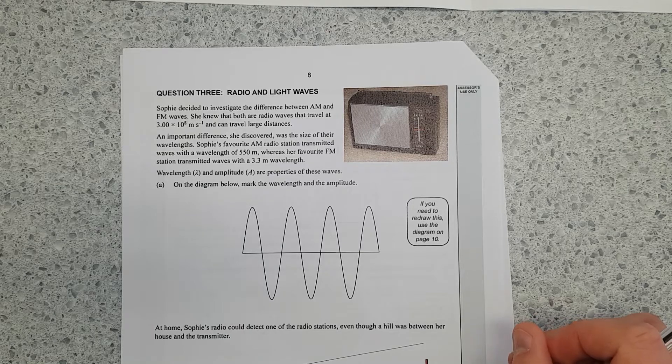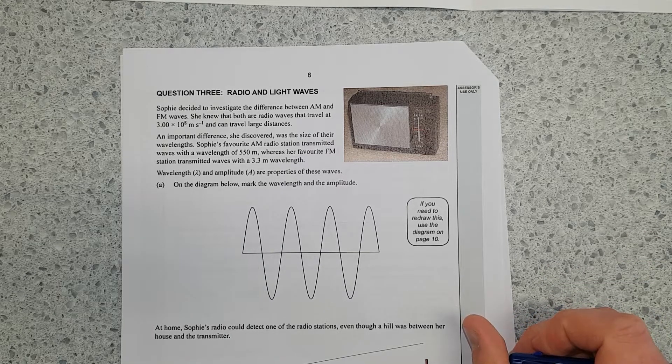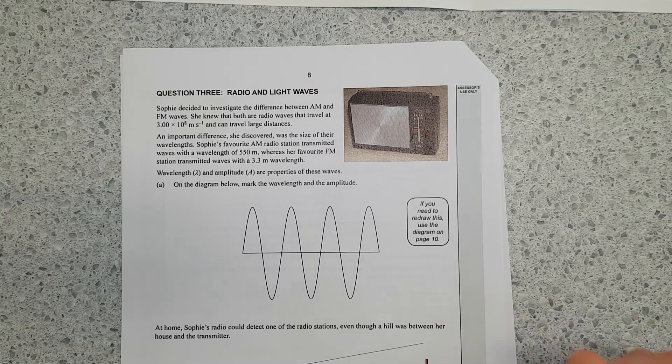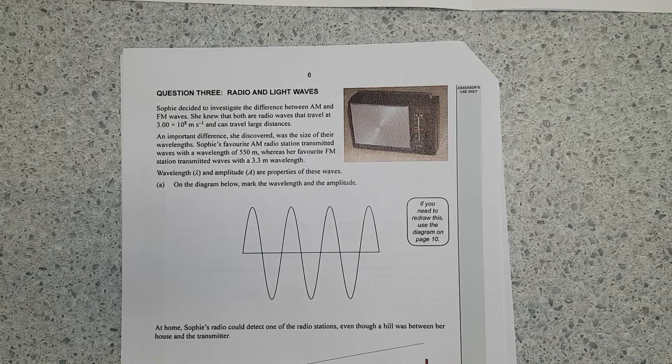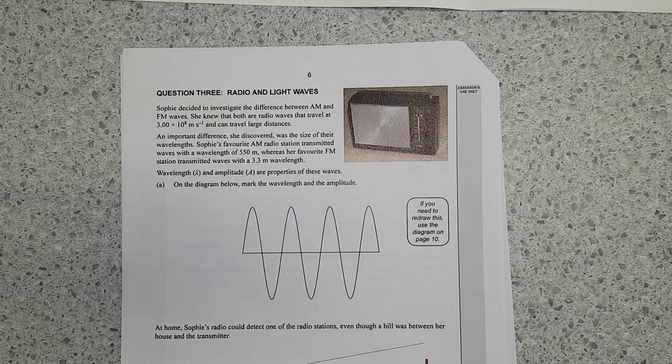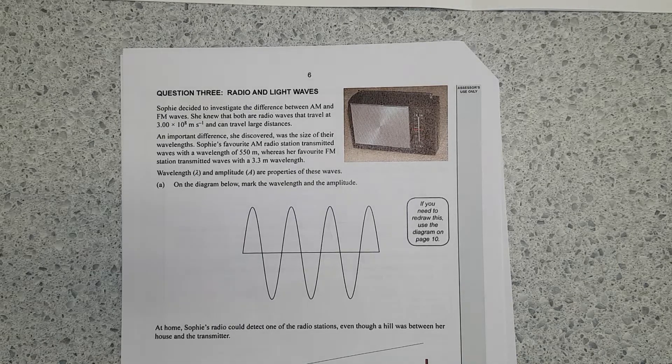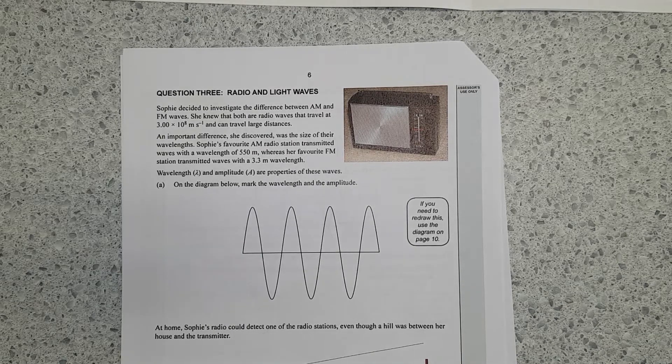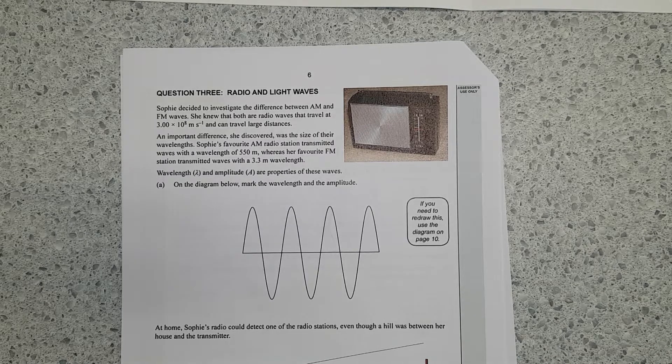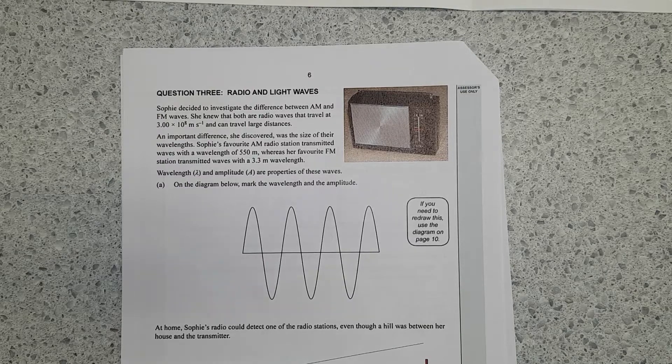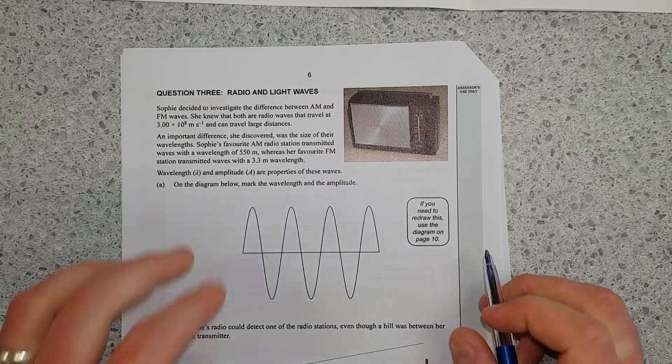Sophie decided to investigate the difference between AM and FM waves. She knew that both are radio waves that travel at the speed of light and can travel large distances. An important difference she discovered was the size of their wavelength. Sophie's favourite AM radio station transmitted waves with a wavelength of 550 metres, whereas her favourite FM station transmitted waves with a 3.3 metre wavelength. Wavelength and amplitude are properties of these waves. On the diagram below, mark the wavelength and amplitude.